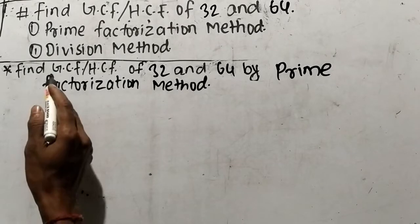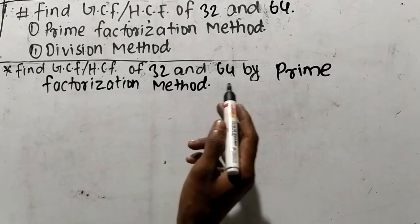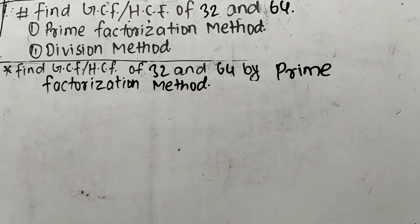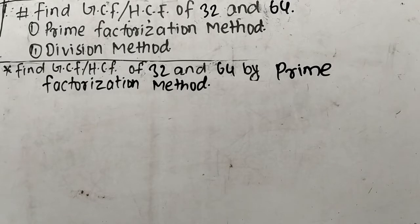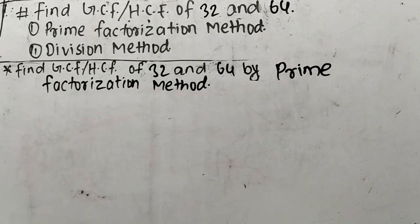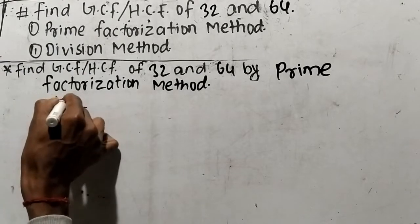So let's find out GCF or HCF of 32 and 64 by prime factorization method. While finding out GCF or HCF by prime factorization method, first of all we have to find out the prime factors of the given numbers. So we have the numbers 32 and 64 — let's find out the prime factors of 32 first.